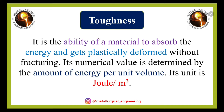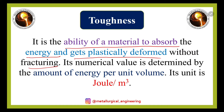Toughness is the energy absorbed by the material up to the fracture point, or the area under the curve up to the fracture point. By definition, toughness is the ability of a material to absorb energy and get plastically deformed without fracture — or up to the fracture point. The numerical value is determined by the amount of energy per unit volume, and its unit is joules per meter squared.